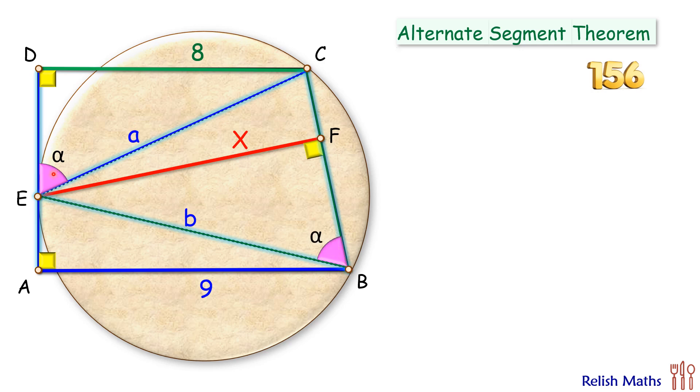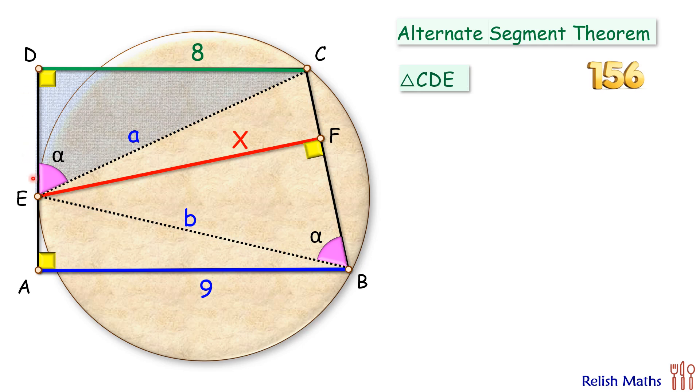Now if we look at the triangle CDE and triangle EFB, so here the angles are 90, alpha, 90 degree and alpha. So by angle-angle similarity the triangles are similar to each other.